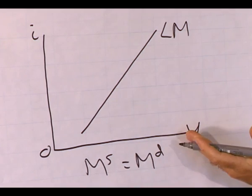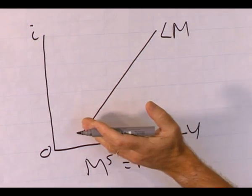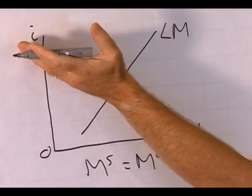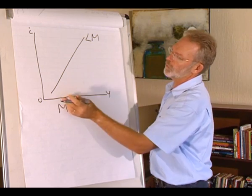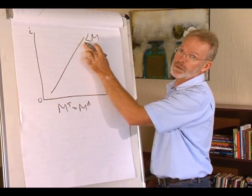As the level of production increases, the financial market is in equilibrium at a higher interest rate, therefore the LM curve has a positive slope.